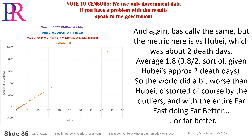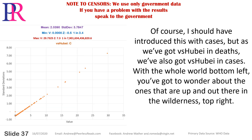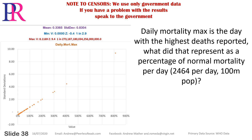After this, when you see an outlier like New York City, Belgium, or the UK, hopefully there'll be more of a sense of how abnormal they are. We also have versus WHO Bay in cases, with the whole world bottom-left — you've got to wonder about the ones way out in the top right. Daily mortality max is the day with the highest deaths reported — what did that represent as a percentage of normal mortality per day? The baseline is 2,464 per day for 100 million population.